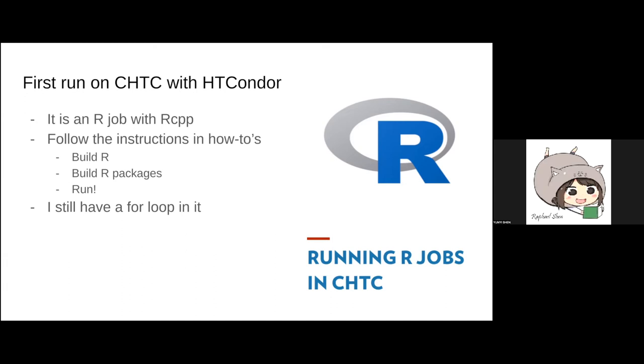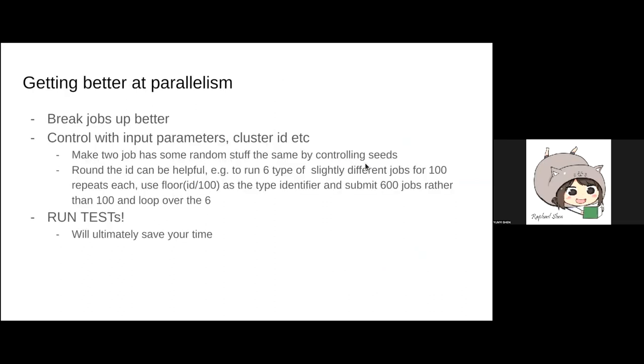At that job, at the first time when I did it, I still remember I wrote a for loop in it to repeat some of the actually independent jobs. I transitioned into high throughput computing from running all my jobs in serial, so I still actually had a for loop in it. I want to say, if you want to run an R job in CHTC, just go there, and that resource is very important.